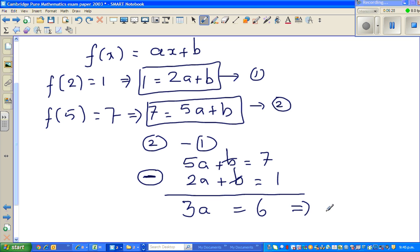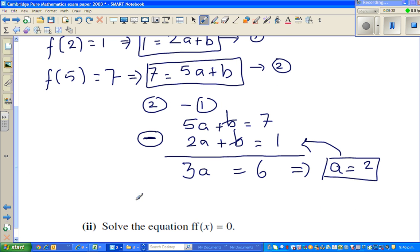Now if 3a is equal to 6, a should be 2. And we can put this value of 2 in this or this. So 2a plus b is equal to 1, which implies what is a? a is 2. So 2 times 2 is 4 plus b is equal to 1. So if you take away 4 from both sides, this would imply b is negative 3. So a is 2 and b is negative 3.